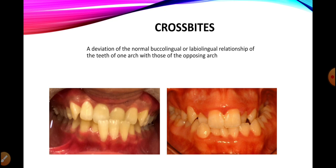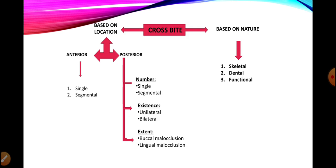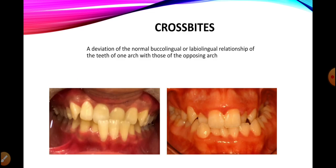In the picture on the right we can see a deviation in the normal posterior relationship: the maxillary dentition is being entrapped by the mandibular dentition. The mandibular dentition is lying slightly buccal to the maxillary dentition. Normally the buccal cusps should lie in the central fossa, but here they are not — they are lying more buckly — and the maxillary dentition is being entrapped by the mandibular dentition. These types of relationships are called crossbites.